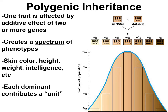Next is polygenic inheritance. Where pleiotropy is one gene influencing many phenotypes, polygenic inheritance is the opposite — one phenotype is affected by many genes. This creates multiple levels or a spectrum of phenotypes. A classic example is skin color. Suppose skin color is determined by three loci: A, B, and C. Each dominant allele contributes one unit of pigment, while recessive alleles give no pigment. If all six alleles are dominant, you have the darkest skin possible; if all six are recessive, you have the lightest skin possible, with many possibilities in between.